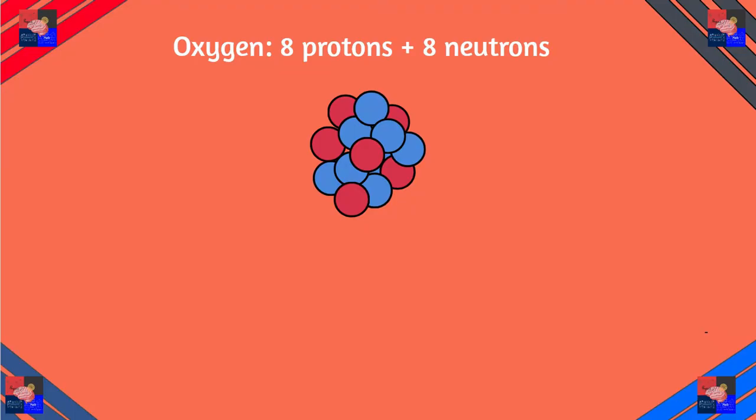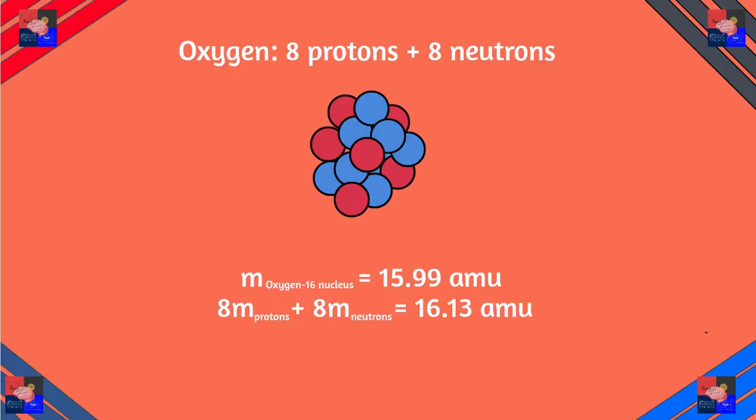This is a much harder concept than what it looks like at the surface, so let's break it down. Imagine an oxygen atom's nucleus with 8 protons and 8 neutrons. You might think the masses of the 8 protons and 8 neutrons add up to equal the mass of the oxygen atom — but that's completely false. If you add them up and compare to the actual mass of the oxygen atom, you'd see that there is precisely 0.14 amu less than the sum of 8 protons and 8 neutrons.